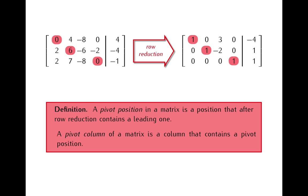In our example we have three pivot columns: the first column, the second column, and the fourth column.